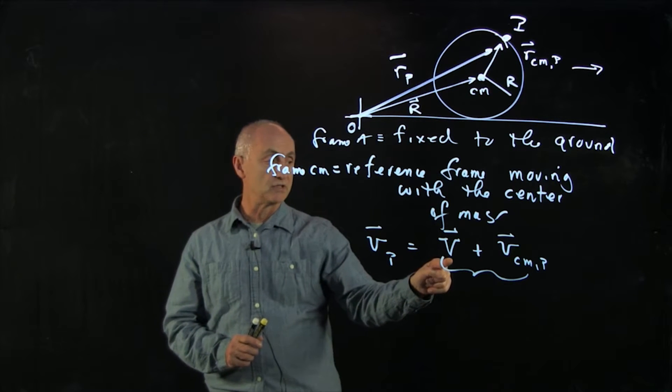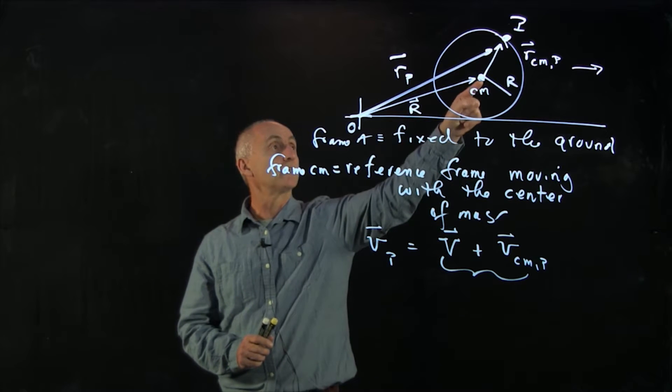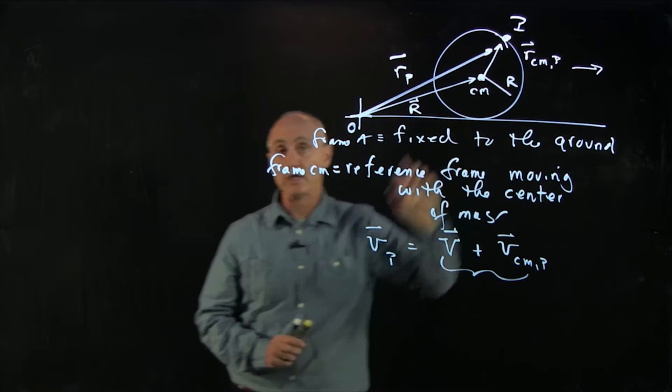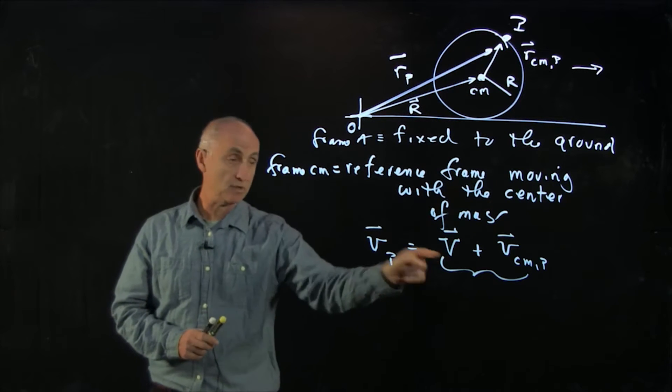The important thing to realize is v is the velocity of the center of mass of the wheel with respect to the ground, and every single point on the wheel has that same velocity v.